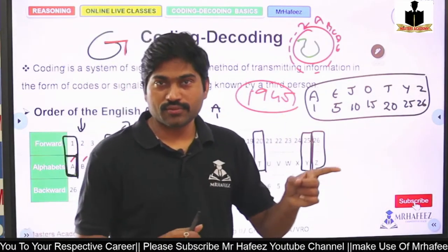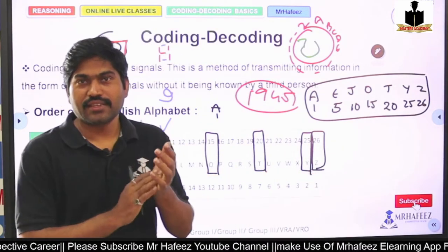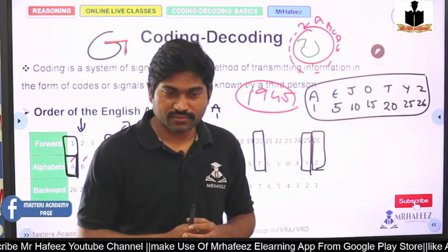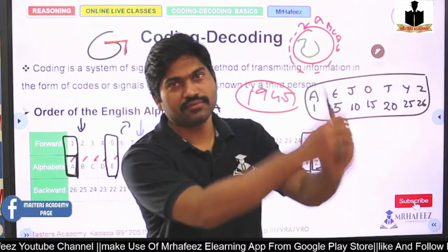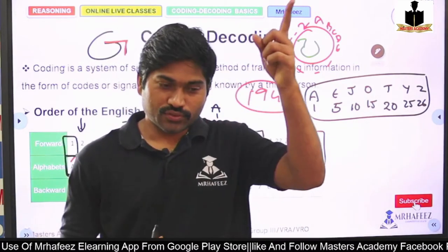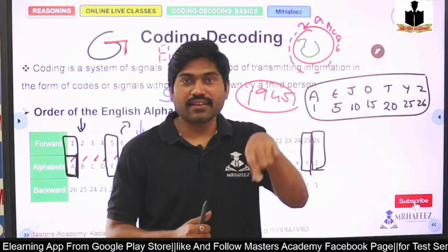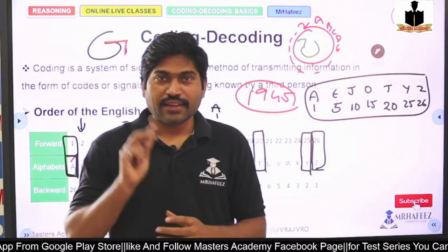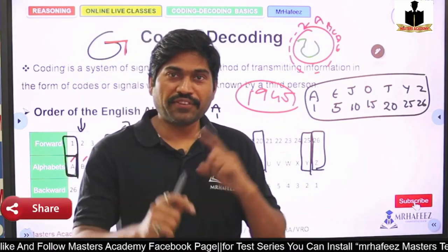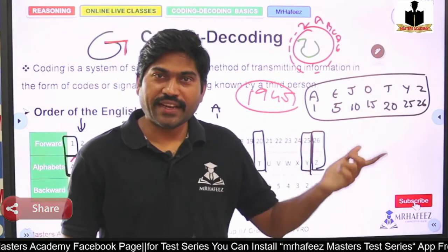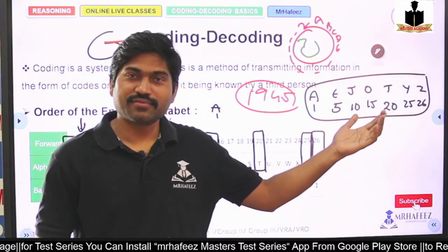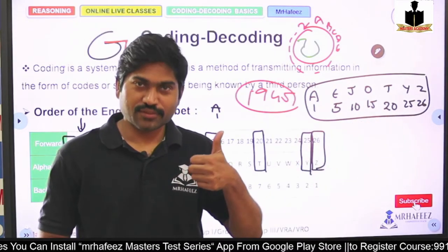Continuing the drill: O — 15, excellent! J — 10, excellent! T — 20. O — 15. J — 5? No, J is 10. A — 1. O — 15. T — 20. Y — 25, excellent! Z — 26. A — 1. E — 5. J — 10. O — 15. T — 20. Y — 25. Z — 26.